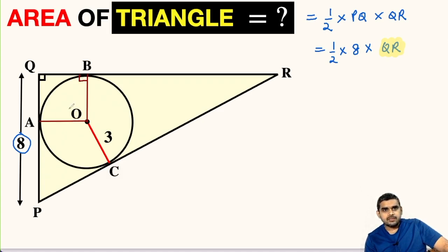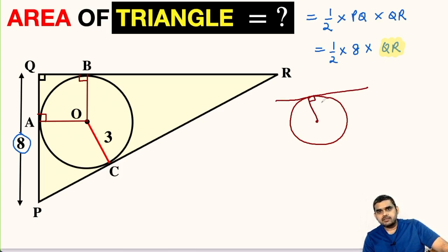Now OB will be perpendicular to QR. Likewise, OA will be perpendicular to PQ, because we know the theorem that if we have a circle, this is the center of the circle, and if this is a tangent and this is the point of contact or point of tangency, then if we join these two points, then this is perpendicular, this is 90 degrees. So using this theorem, we get these two angles as 90 degrees.